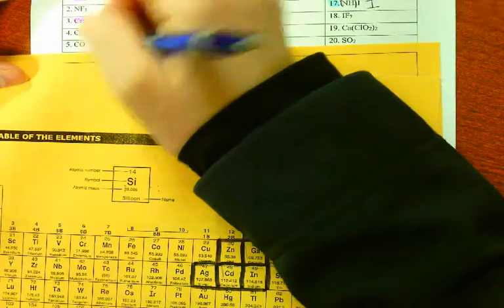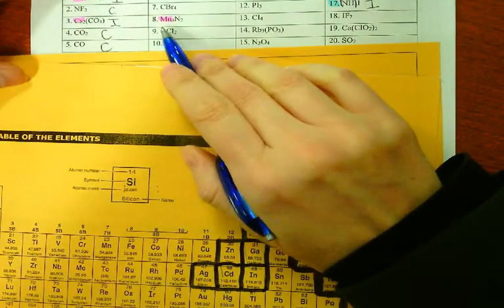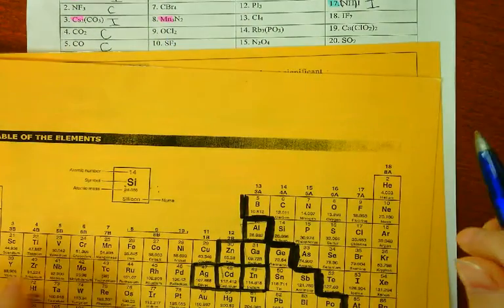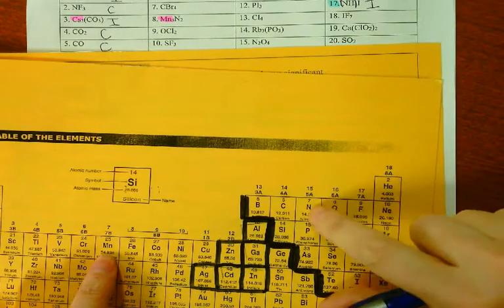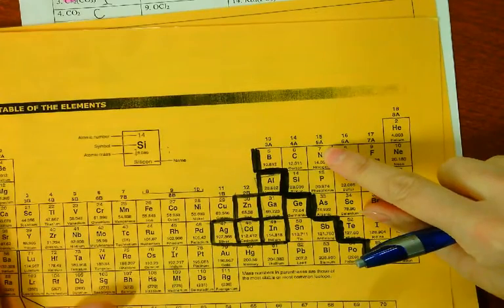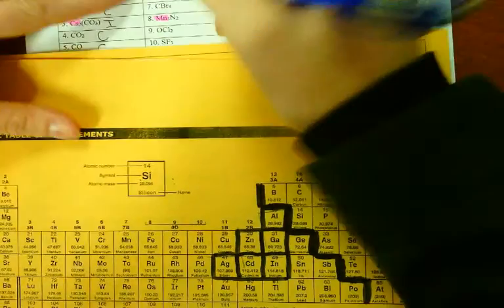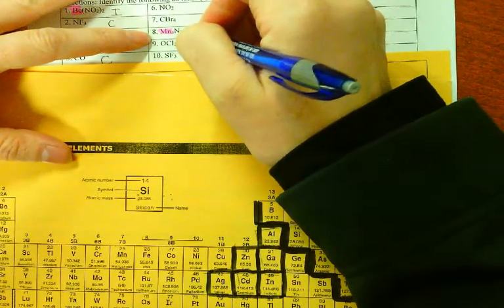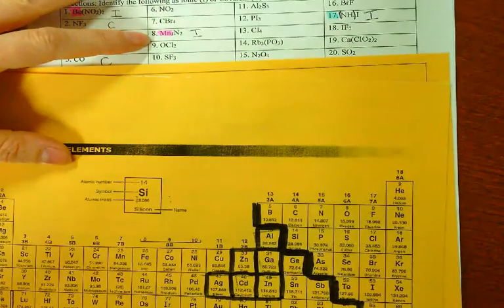Carbon and oxygen, again, so that's covalent, only non-metal. Number 8, you have manganese, which is right here, and nitrogen. So that is a metal. Anything on this side of my periodic table, if it's in there, then manganese and nitrogen would have to ionically bond.